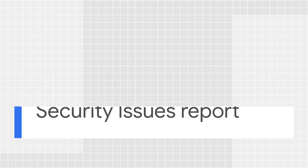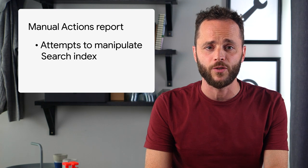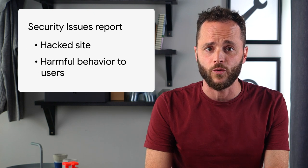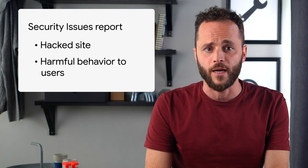Now that I've discussed both security issues and manual actions reports in this series, I thought I would clarify the difference between them because there is some conceptual overlap. The manual actions report lists manually detected issues that are mostly attempts to manipulate Google search index but are not necessarily dangerous for users. As a result, most manual actions will result in a group of pages or the entire site ranking lower or dropping from search results without any visual indication to the user. The security issues report shows instances where your site was hacked or behavior on your site that could potentially harm a visitor — for example, phishing attacks or installing malware on the user's computer.